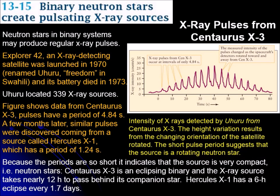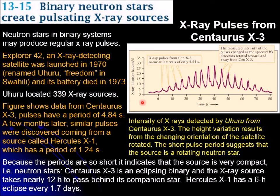In section 15, we see that binary neutron stars can create not only flashes of x-rays but pulses of x-rays. In 1970 a satellite was launched named Uhuru, which means 'freedom' in Swahili. It operated from 1970 to 1973 and located 339 x-ray sources. You can see the periodicity of the x-ray pulses as a function of time — they are pulsating x-ray sources.